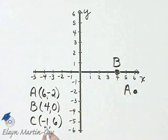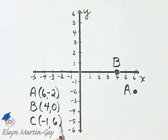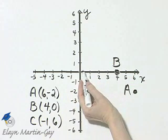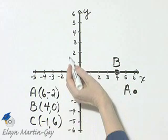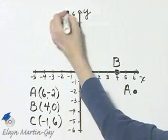And then C has coordinates negative 1, 6. So we'll start at the origin. We'll move 1 unit to the left. From there, 6 units up. Start at the origin, 1 unit to the left, 1, 2, 3, 4, 5, 6 units up.